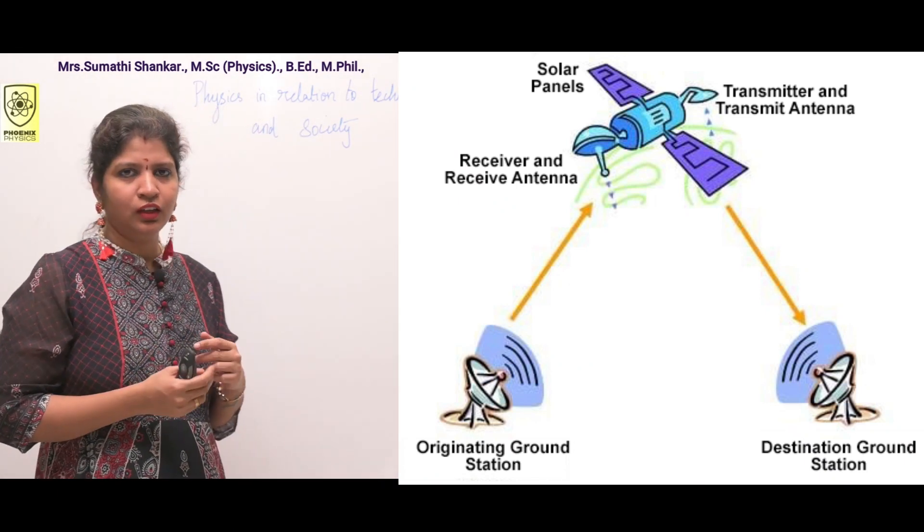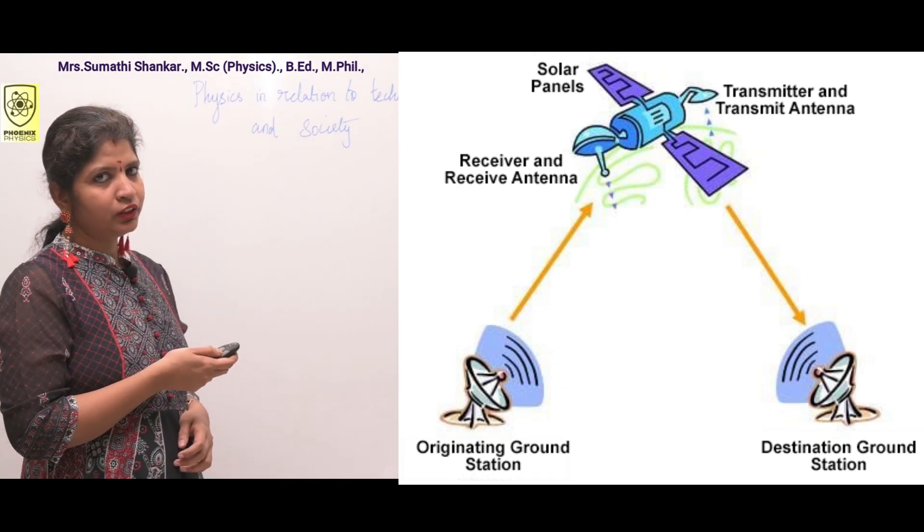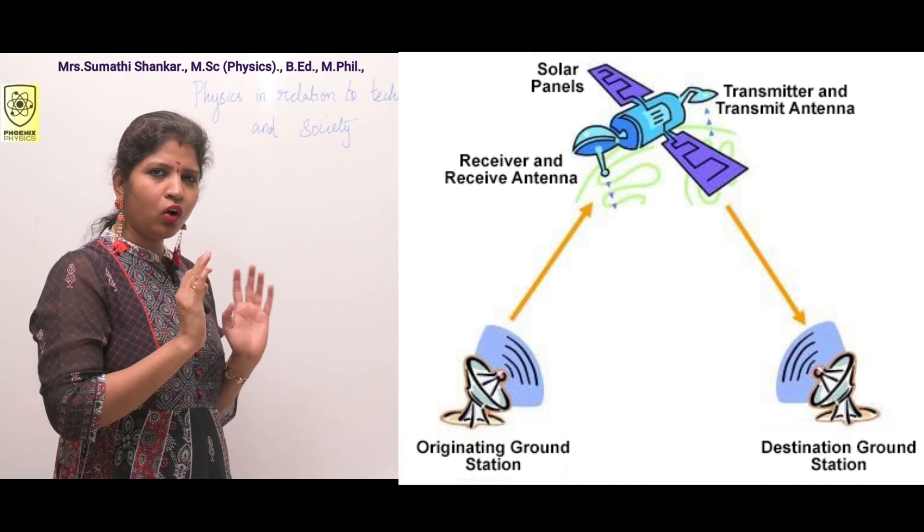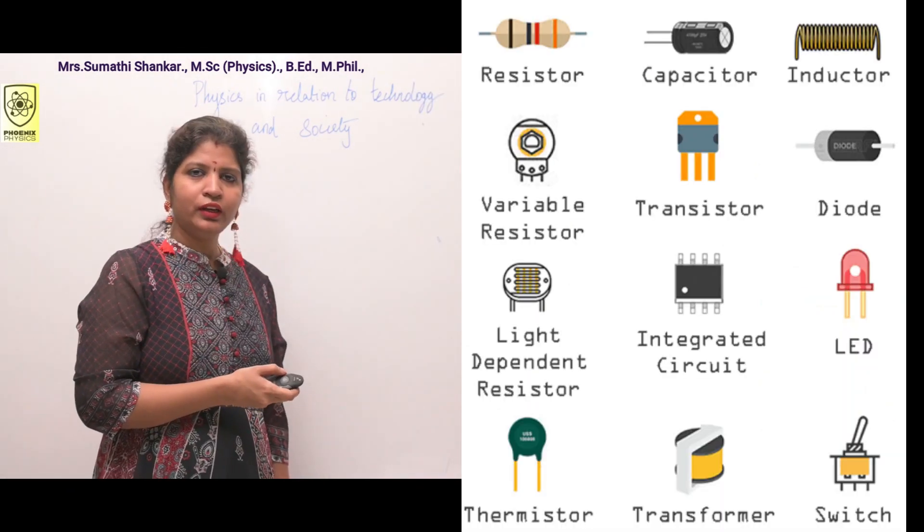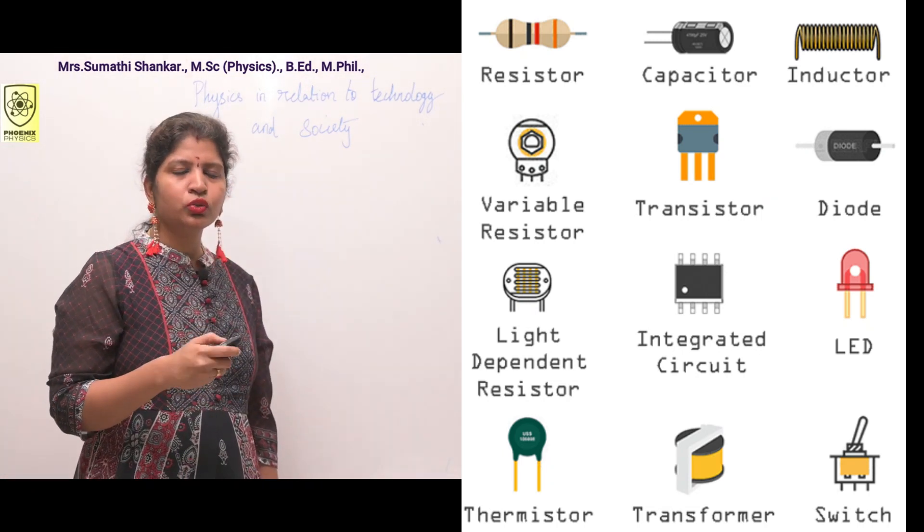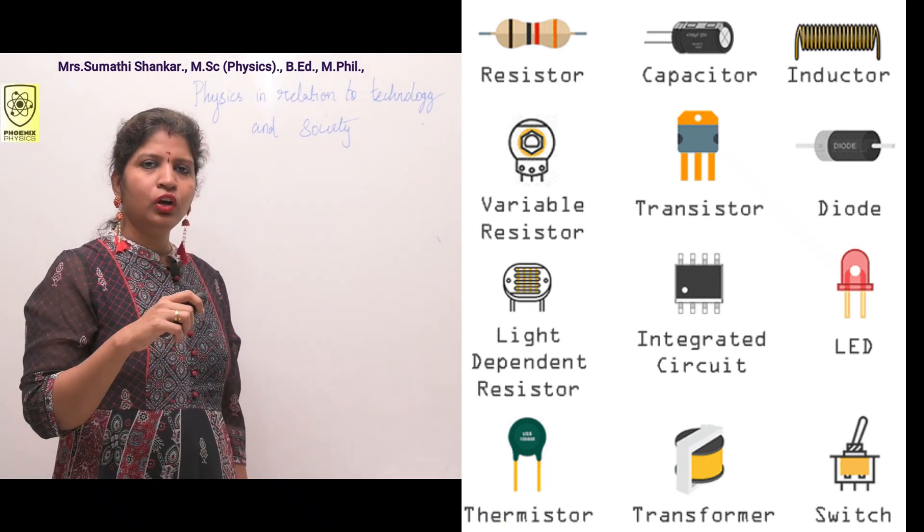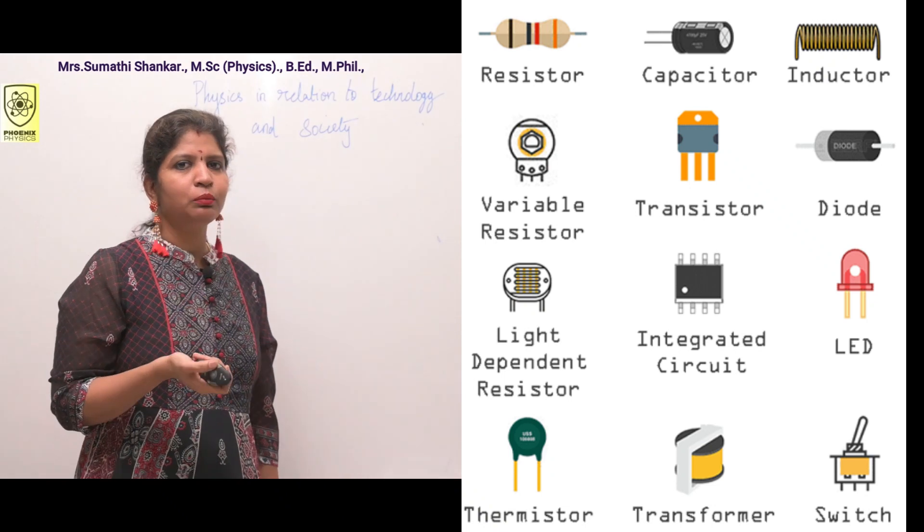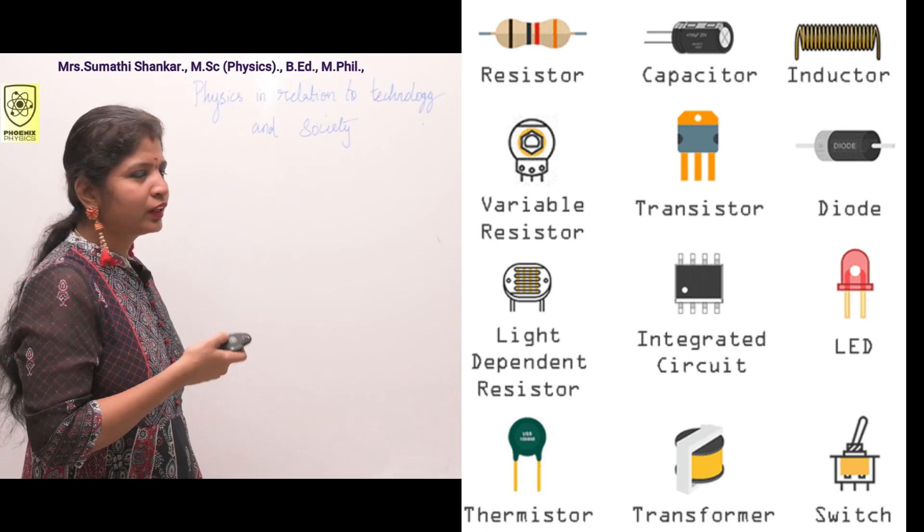In short, communication shrunk the world. Third, microelectronics, laser, superconductivity, computer, nuclear energy etc. are all based on physics. Let's discuss them one by one. Micro means small. In day-to-day life we use many electronic devices. All electronic devices consist of two or more combinations of microelectronic devices. Can you give examples? Transistor, capacitor, resistor, diode, insulator.